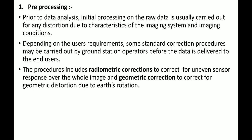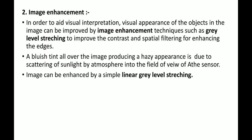Radiometric corrections are used to correct uneven sensor response over the whole image. When the image response is unevenly distributed, radiometric corrections are applied. Geometric corrections are used to correct for geometric distortion due to the earth's rotation and motion. Because of these geometric corrections, the images can be properly processed.